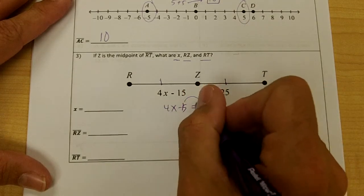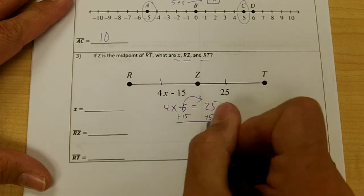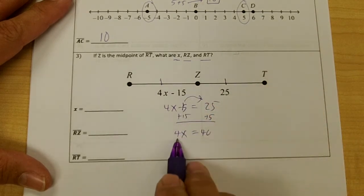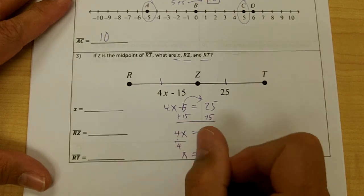To solve this for x, I'm going to isolate my x, so I'm going to move over the 15. I'm going to get 4x equals 40, and then I need to divide by 4 to get my x by itself. So my x would end up being 10.